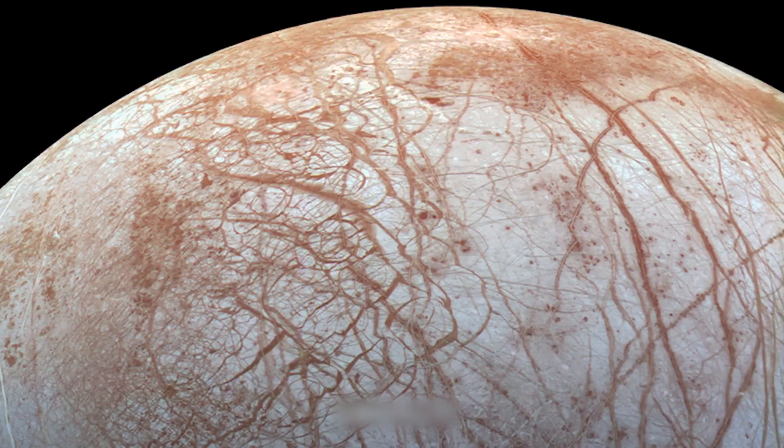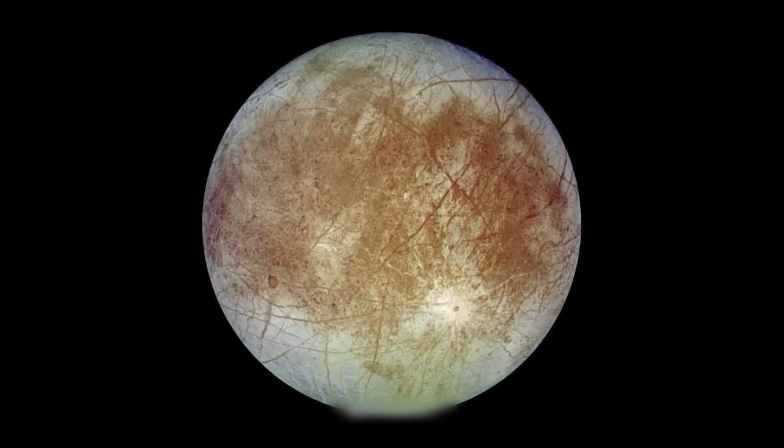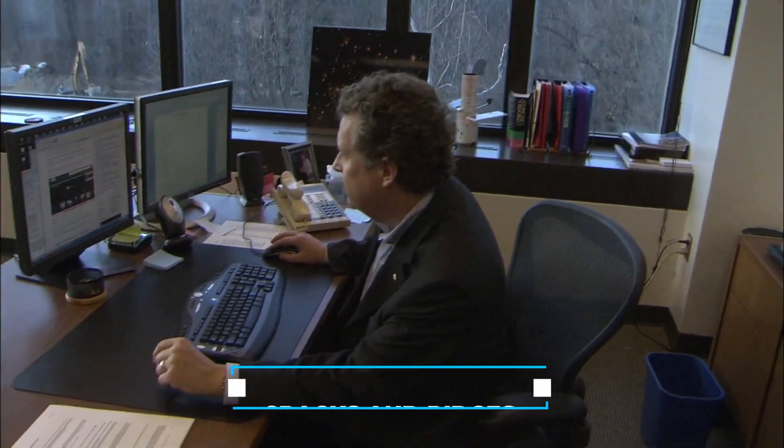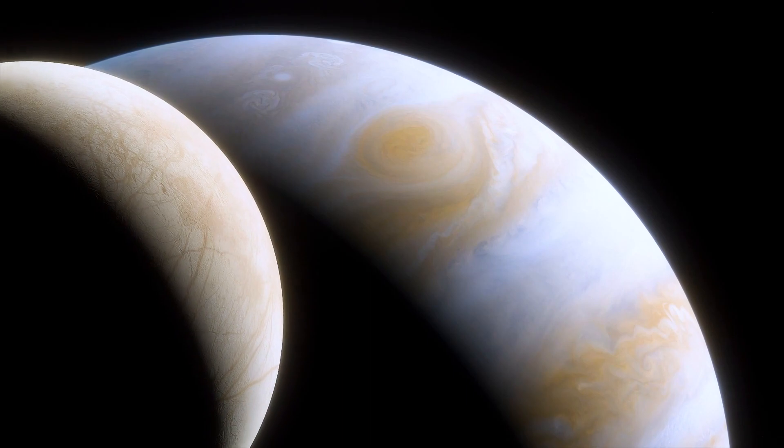Europa's surface appears frozen with a layer of ice covering it, but it's not entirely lifeless or static. Scientists have observed cracks and ridges in the icy surface, indicating movement and shifting beneath.